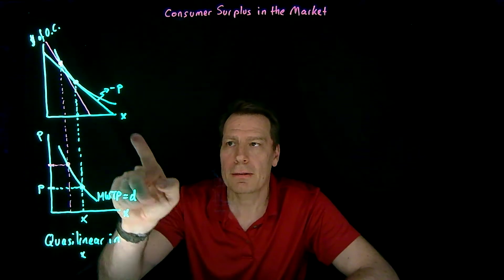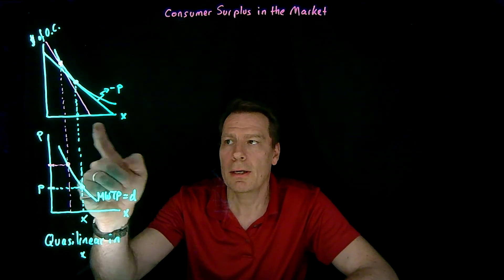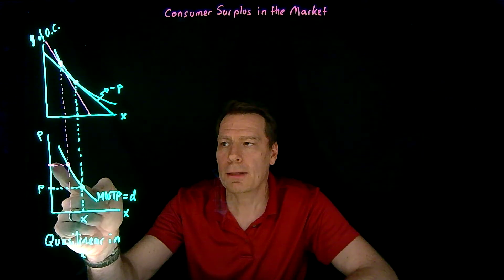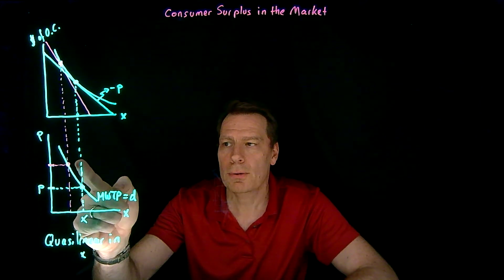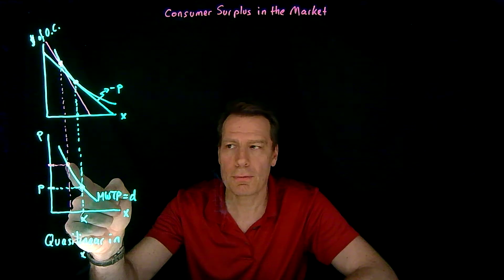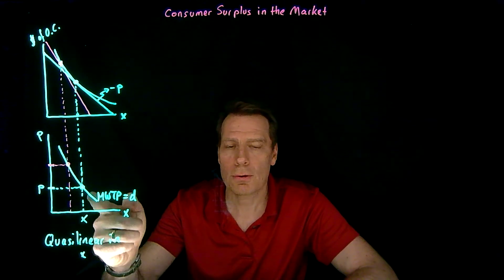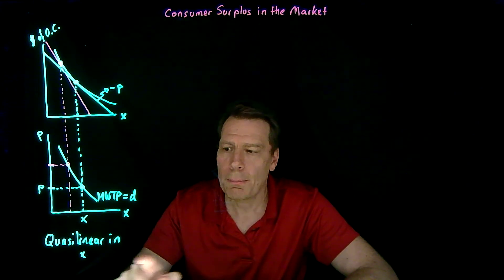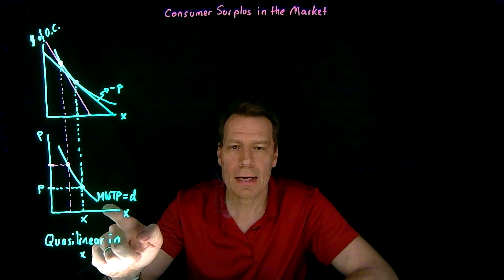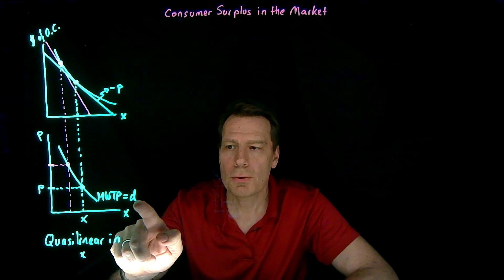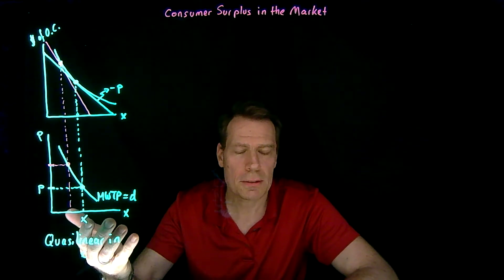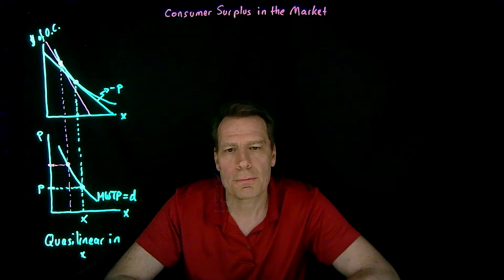If good x is an inferior good, the income effect pushes in the opposite direction, placing the point on the demand curve to the right of the compensated demand curve, making the regular demand curve steeper. But in the quasi-linear special case, the two curves are exactly identical, and so we can use the regular demand curve to measure consumer surplus because it equals the marginal willingness to pay curve.